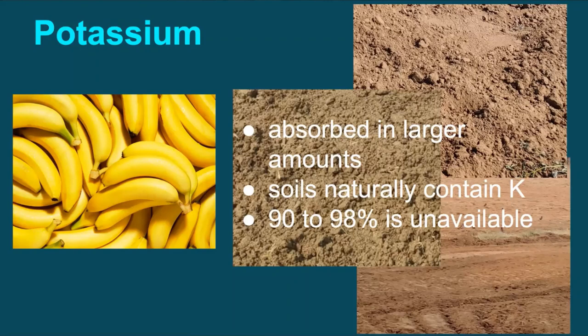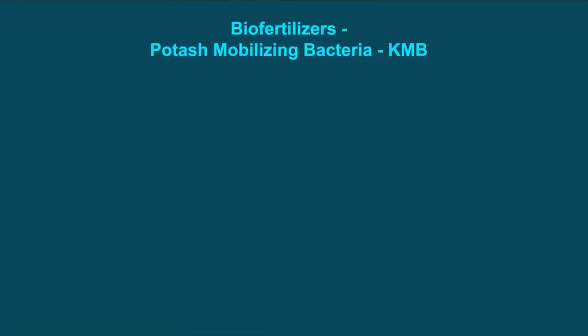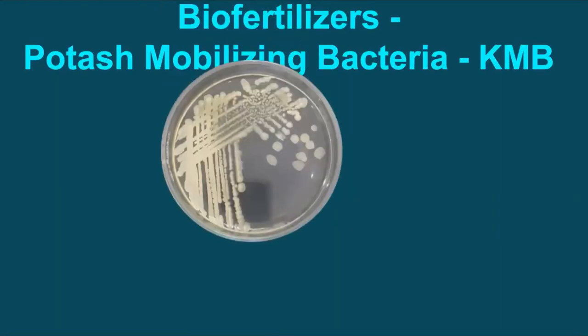Depending on soil types, 90 to 98% of soil potash is unavailable for plant uptake. Commercially available potash fertilizers are completely soluble in water and contains nutrients in readily available form, but they don't remain soluble for a long time. Potash mobilizing bacteria that is KMB, solubilizes potash minerals, making them easily available for plants.